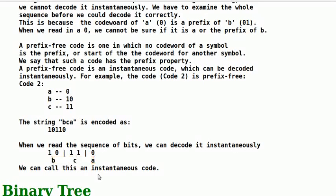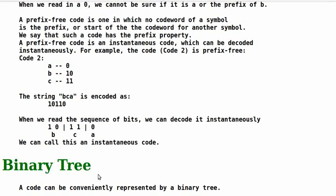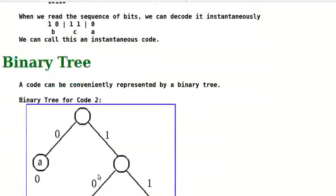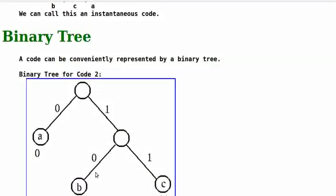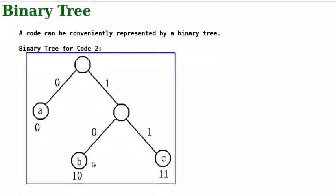A code can be conveniently represented by a binary tree. A symbol is denoted by a node and the codeword of the symbol is given by the path from the root to the node, assuming that a left branch signifies a 0 and a right branch signifies a 1 as shown in this figure, which represents code 2, in which the codeword of A is 0, B 10, C 11.